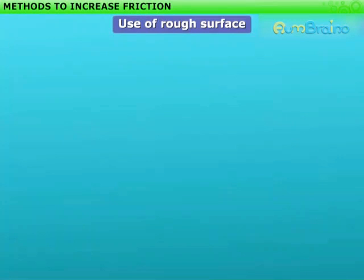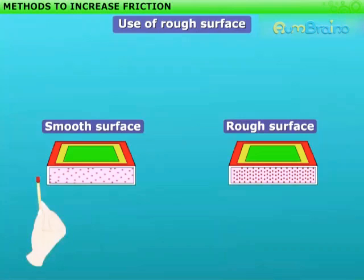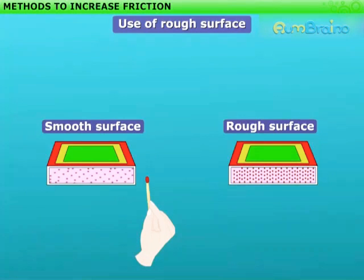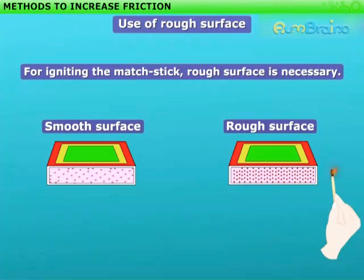Use of rough surface. To burn a matchstick, you need a rough surface of the matchbox. When the rough surface of a matchbox becomes smooth, the stick is not ignited. If struck against a rough and dry surface, it burns. The reason behind it is that there is more friction.